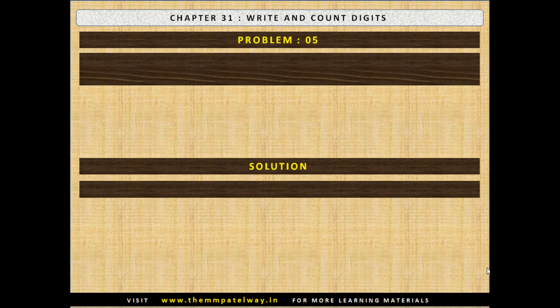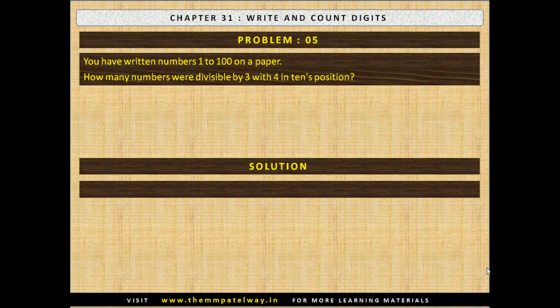Problem No. 5: You have written numbers 1 to 100 on a paper. How many numbers were divisible by 3 with 4 in the tens position? Now stop the video and find the solution. The solution follows: there are three such numbers — 42, 45, and 48.